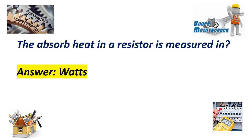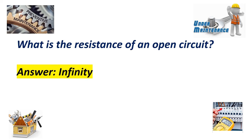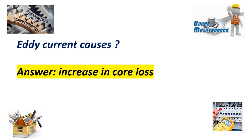The absorbed heat in a resistor is measured in? Answer: Watts. What is the resistance of an open circuit? Answer: Infinity. AC current causes increase in core loss.